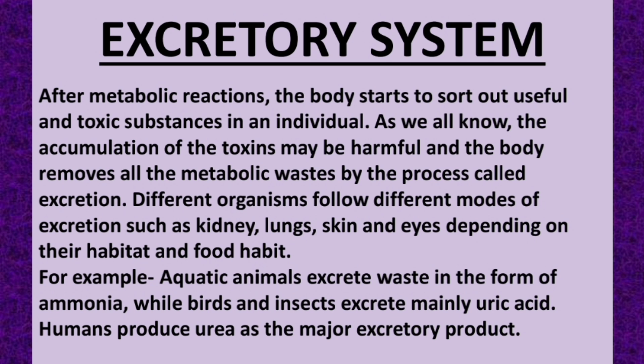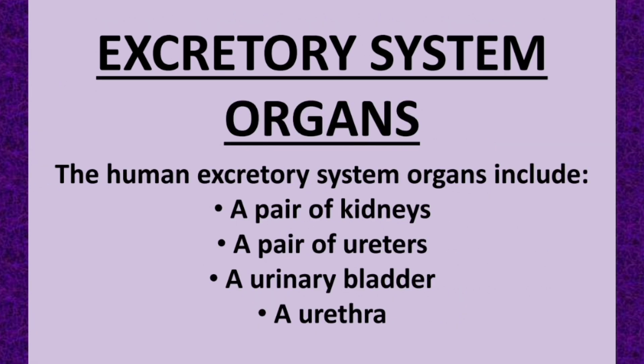Different organisms follow different modes of excretion through organs such as kidneys, lungs, and skin, depending on their habitat and food habits. For example, aquatic animals excrete in the form of ammonia, while birds and insects excrete mainly uric acid. Humans produce urea.